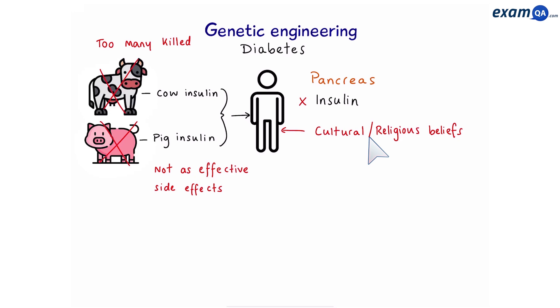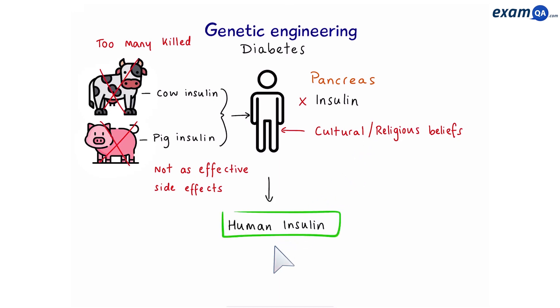Also, some people might be against using animal insulin due to cultural or religious beliefs. So what's the solution? The solution is that we need human insulin; however, we don't want to be taking it from other humans. So we're going to be using bacteria to make human insulin.